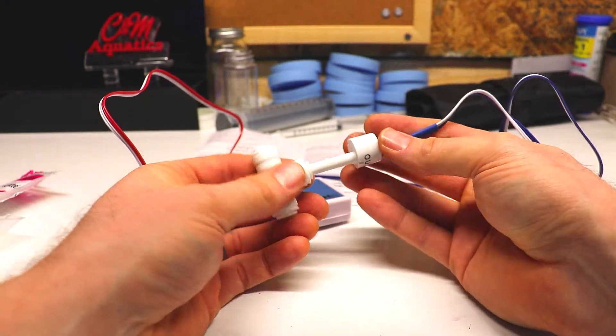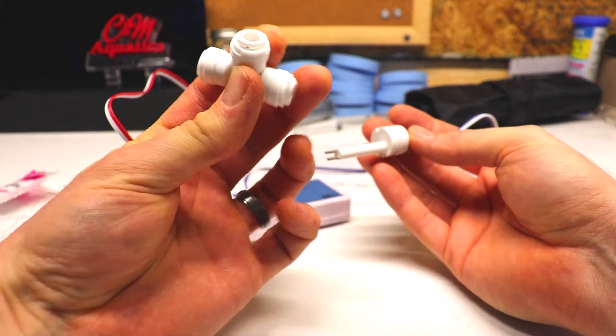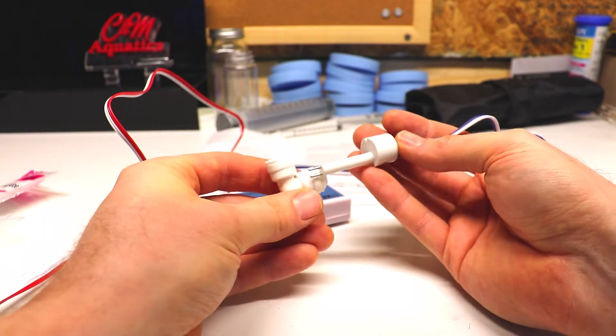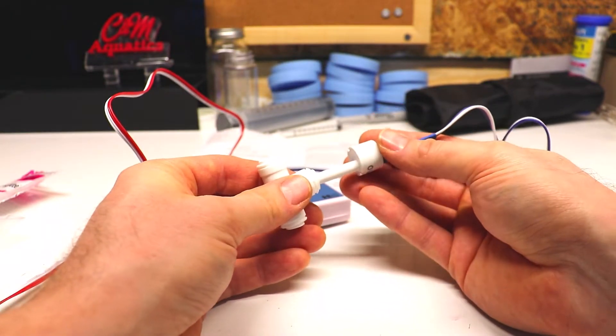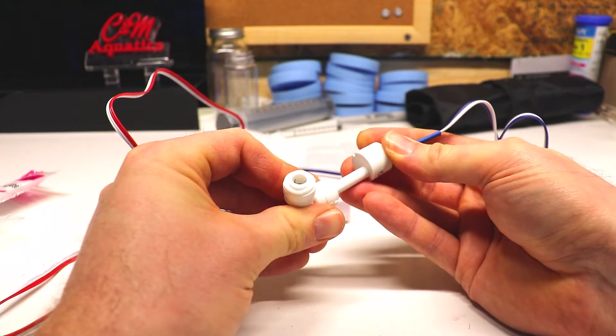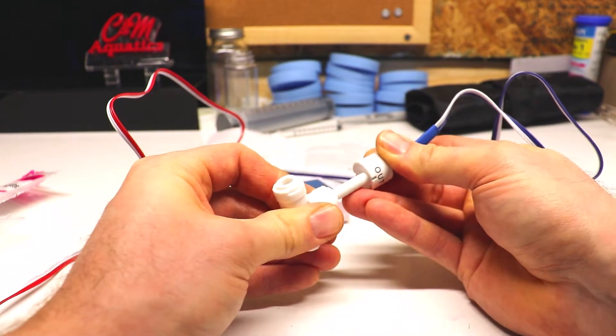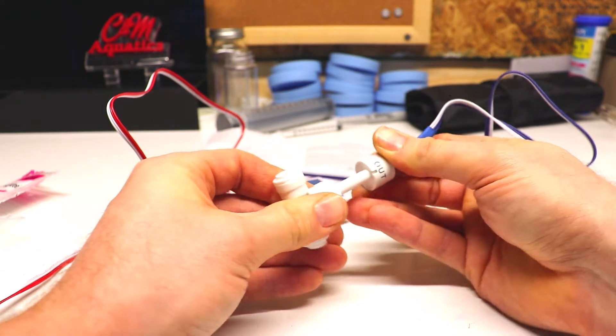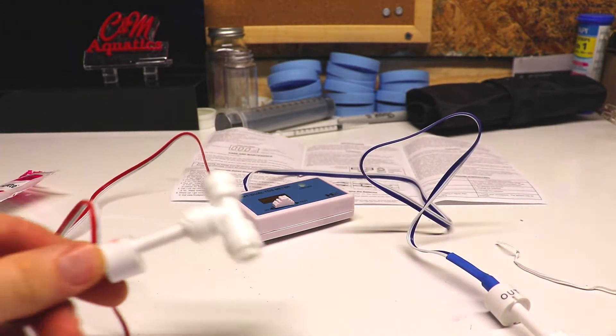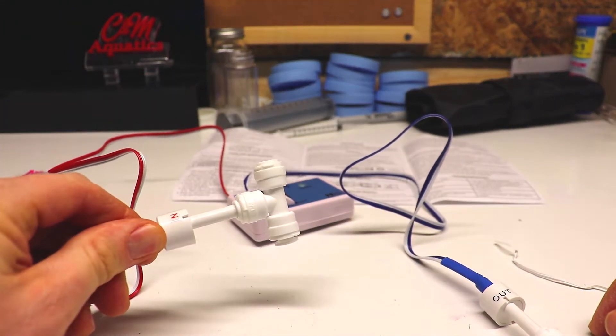You're going to do the same thing with the outline probe - put it in the bottom port of the T. It did say in the instructions not to touch the electrodes on the end of the probe, that the oils in your skin might mess them up and make them be inaccurate. That's the first part: getting our probes in.